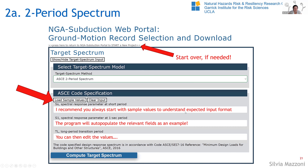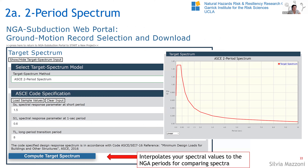This is the first section where you define the target spectrum. I always highly recommend you start with loading the sample values — it helps you understand the input format and auto-populates everything, and then you can edit just the parts you need. Databases are very sensitive to correct input. For the two-period spectrum, you put in the three points: S-sub-S, S-sub-1, and T-sub-L. I interpolate at the NGA periods for the constant acceleration, velocity, and constant displacement sections based on T-sub-L, which is then used as the target spectrum.